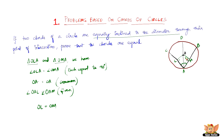Since OL equals OM, it shows that chords AC and AB are at equal distances from the center of the circle. Therefore we prove that AC equals AB. This ends the problem.